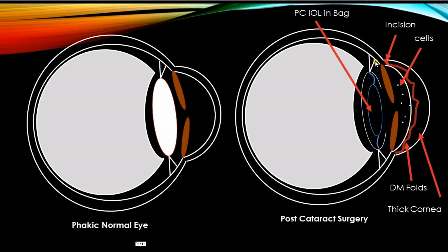These cells come out and are seen floating in the anterior chamber. They are signs of anterior uveitis, and this is typically a sign of post-inflammatory anterior uveitis.